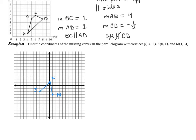One way to find the missing vertex is to find the slope from J to K — going up 3 over 3 — and match that movement from M to the new point. So starting from M, going over 3 and down 3 gives us where the coordinate should be.